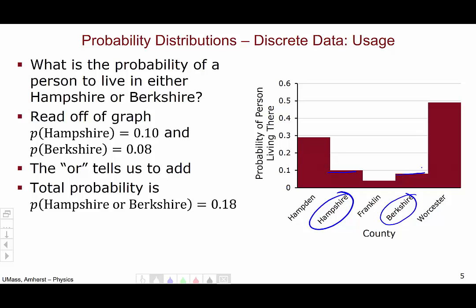The OR tells us that we should add in line with a previous video. So the probability of a person living in Hampshire or Berkshire is the sum of the probability of a person living in Hampshire and the probability of a person living in Berkshire. Add these two probabilities together and you get a probability of 0.18 or 18%. This is something that you need to be able to do.